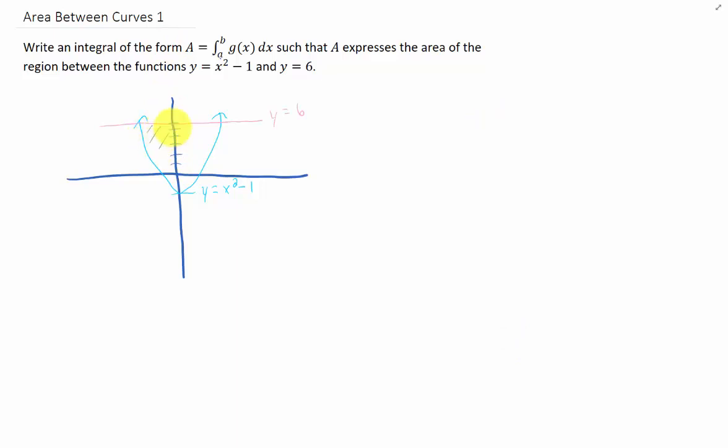The area between any two curves can be represented by an integral. In this case, we have one function that's the top function and one that's the bottom function. The area is represented by the integral of the top function minus the bottom function. The limits of integration are given by the lowest value of x in this region and the highest value of x in this region.